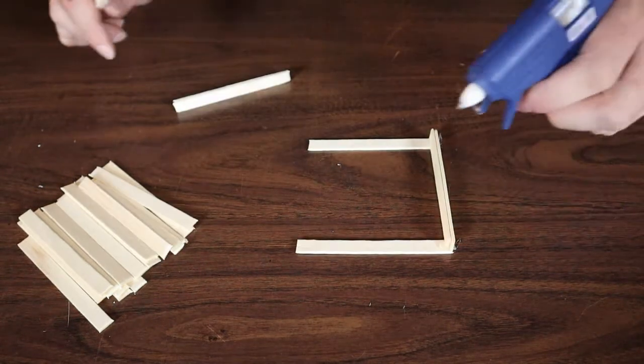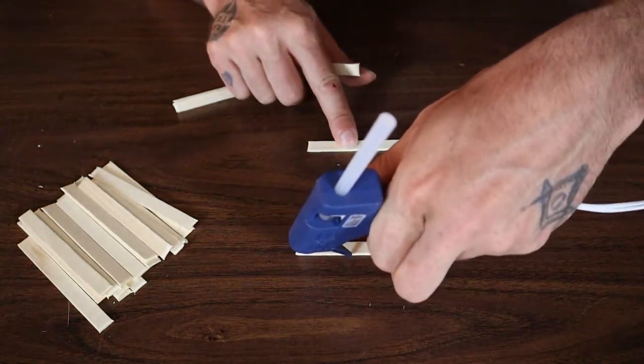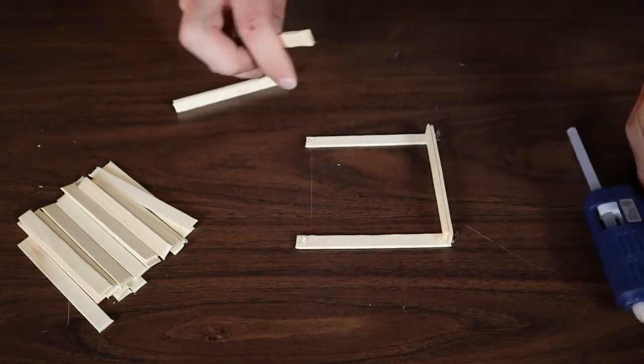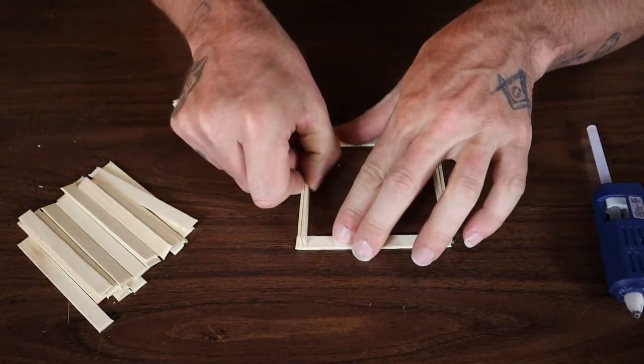Another way you can do that is place two of your runners on the table and put some glue in the corners there and then place your outside runners on the top like this.